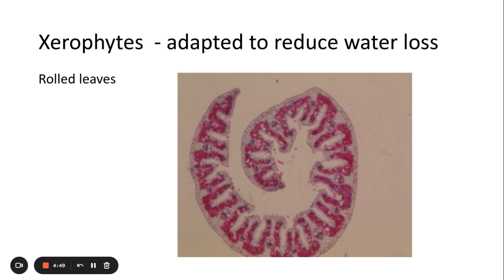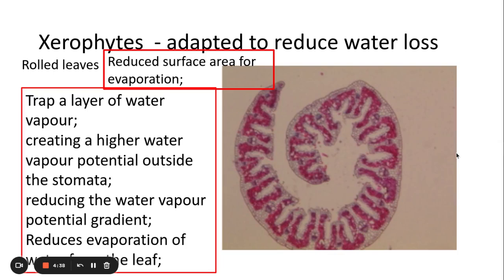One of the adaptations they have is that they can have rolled leaves. This is like the marram grass that you would find on sand dunes, especially on the English shore. The reason why they have rolled leaves, as you can see in this picture here, is because they reduce the surface area for evaporation of water vapor through the stomata.